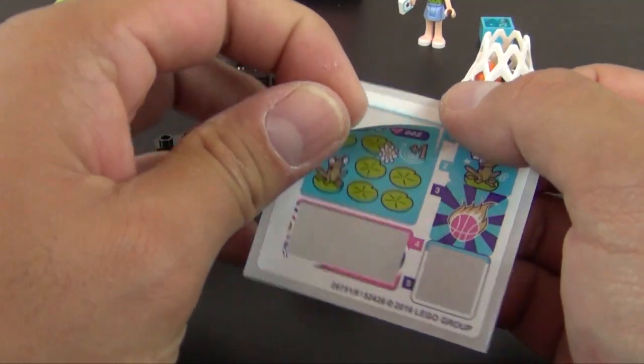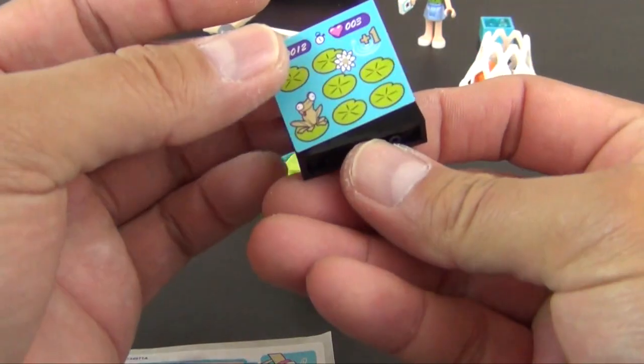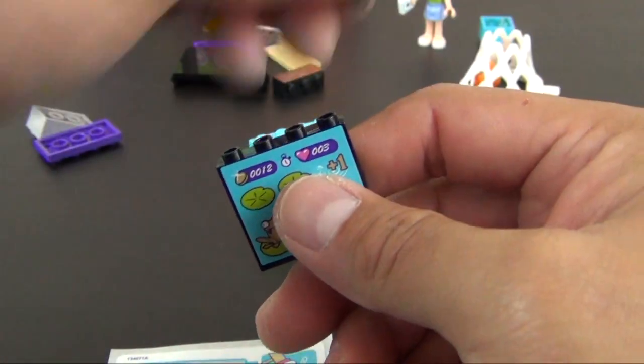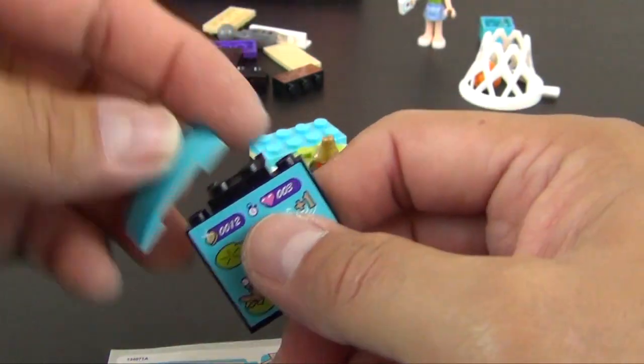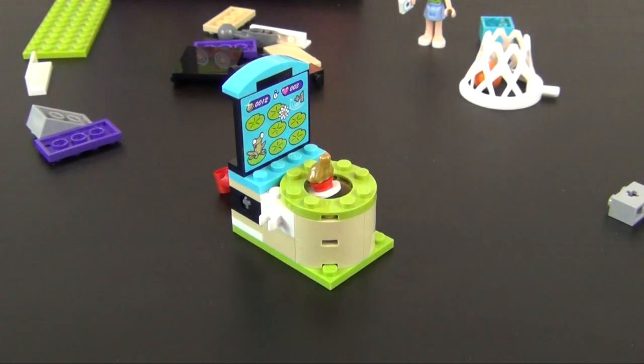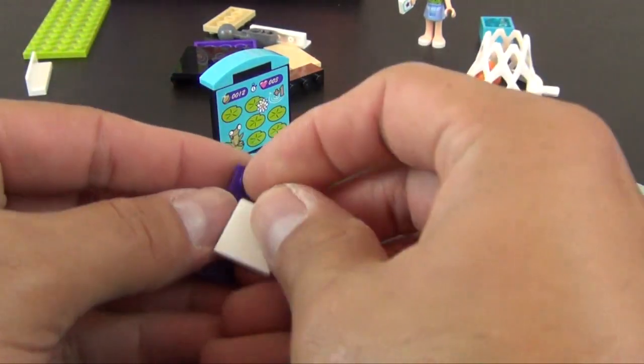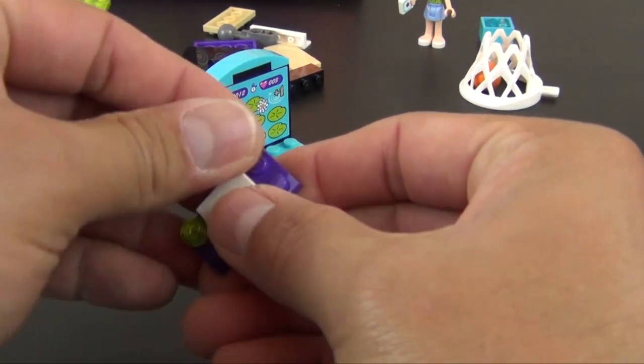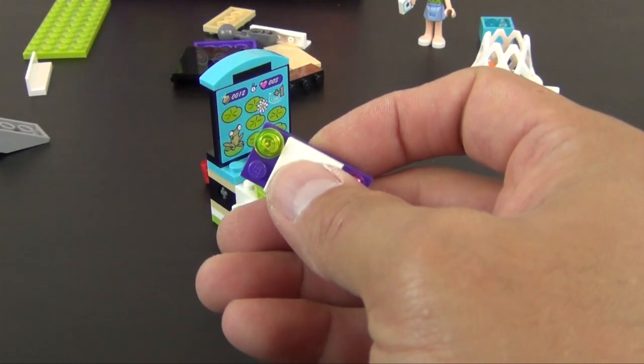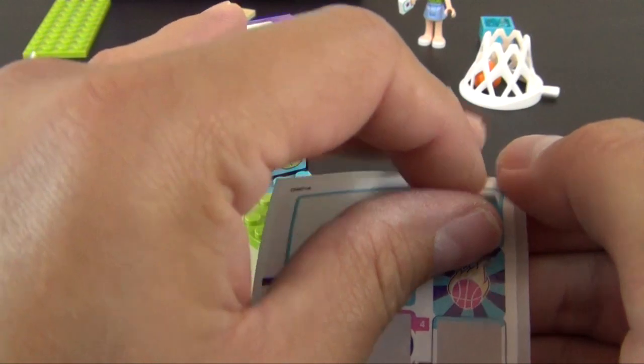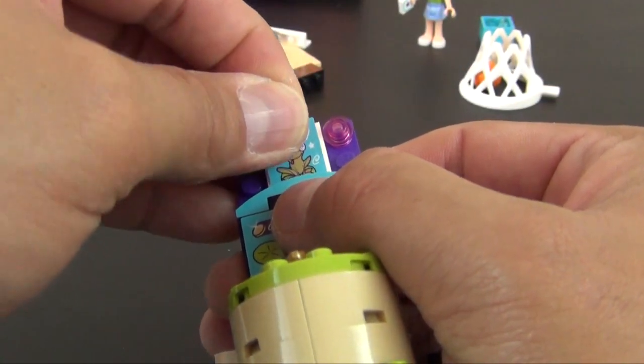We have a sticker. Looks like the little scorekeeper, tells you how many of the frogs you've whacked. A plate with a tile, a couple more of the lights or simulated lights. They don't actually light up. Just trans studs, and this gets another sticker to kind of remind you what game you're playing.